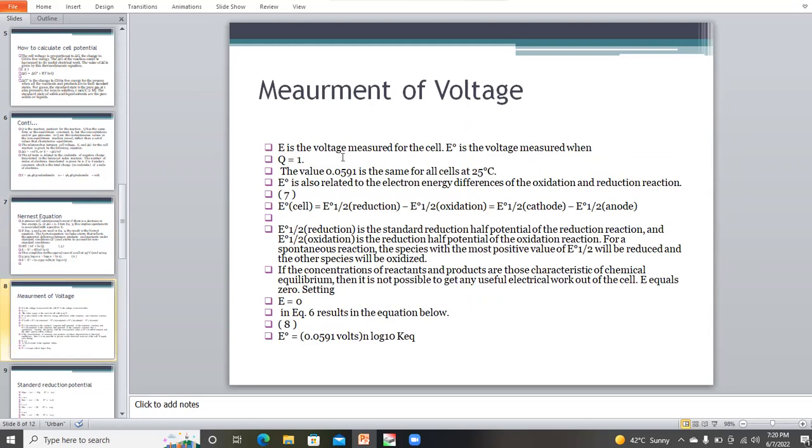E is the voltage measured for the cell. E0 is the voltage measured when Q equals 1, meaning when the reaction has not started. The value of 0.059 is the same for all cells at 25 degrees Celsius. E0 is also related to electrons and energy difference of oxidation and reduction reactions. E0 equals E0 half reduction minus E0 half oxidation, which equals E0 half cathode minus E0 half anode. In this way we can calculate the cell potential before and after the reaction.